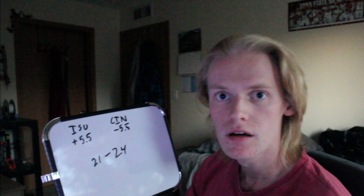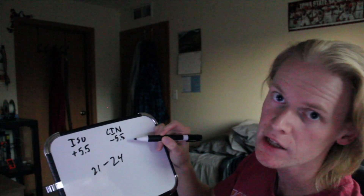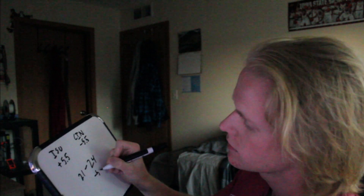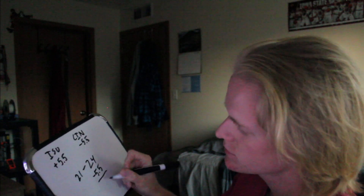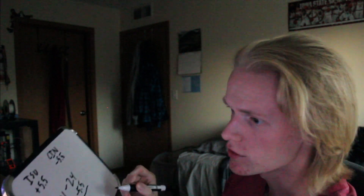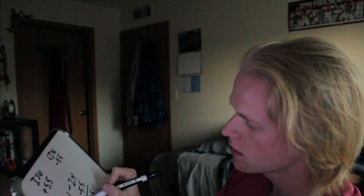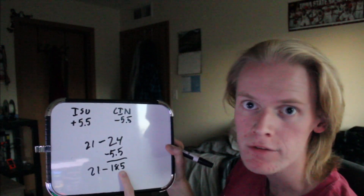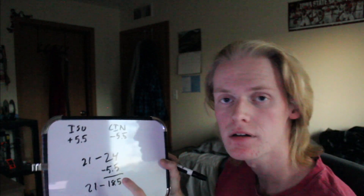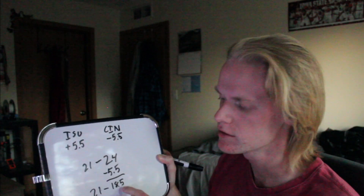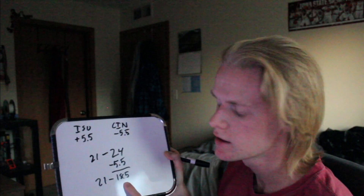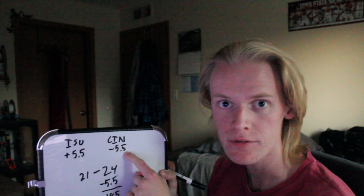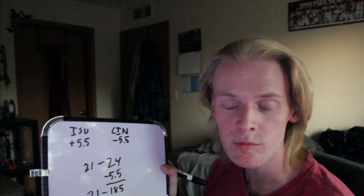Now let's say in this same scenario you picked Cincinnati and the minus five and a half. You apply the spread manipulation and the result of the game is 21 to 18.5. Because after the spread manipulation your team has less points — your pick of Cincinnati minus five and a half ended up in a loss. So your pick would not have won.